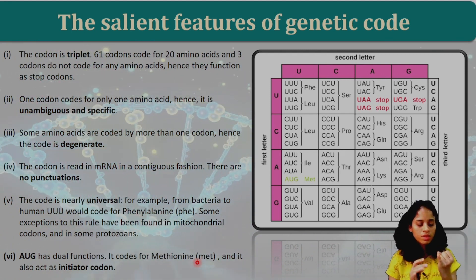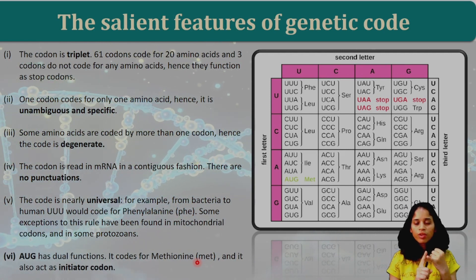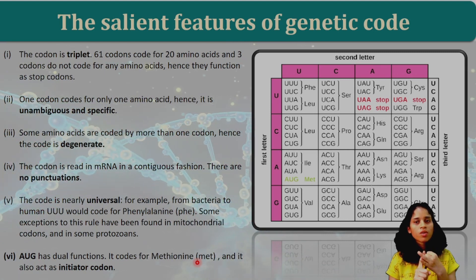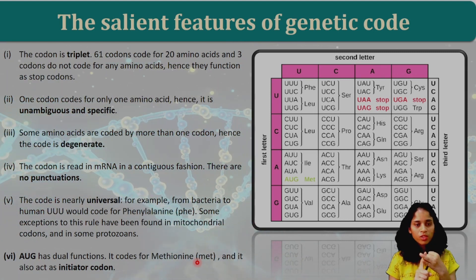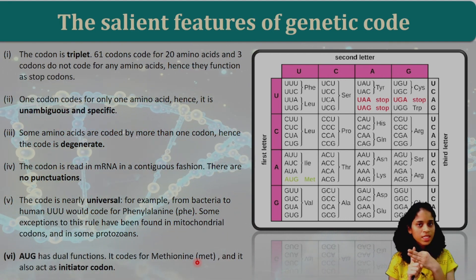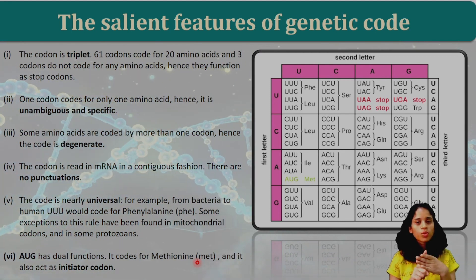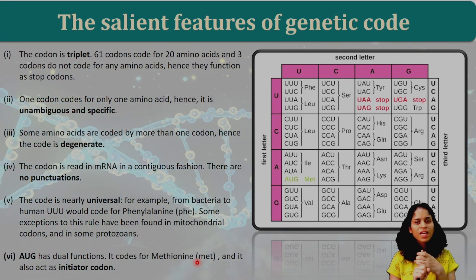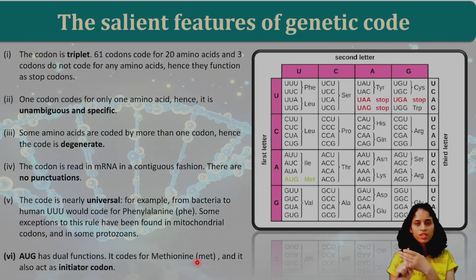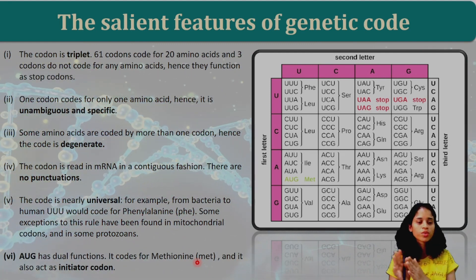To summarize: first, the code is a triplet — 64 codons and 61 amino acids; the other three are stop codons. The genetic code is specific and unambiguous — one codon codes for only one amino acid. The code is degenerate — one amino acid can be coded by more than one codon. There are no punctuations; codons are read in a contiguous fashion. And the genetic code is nearly universal.